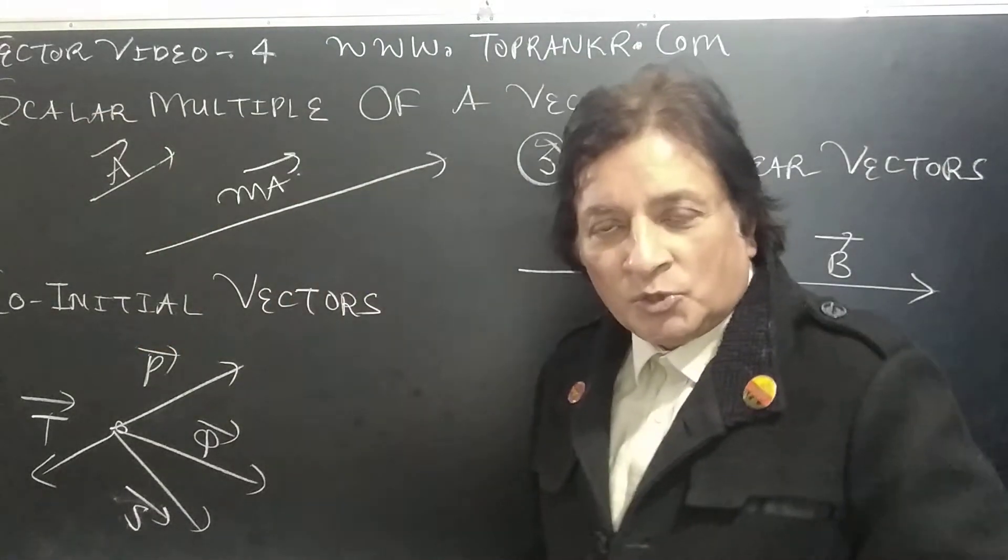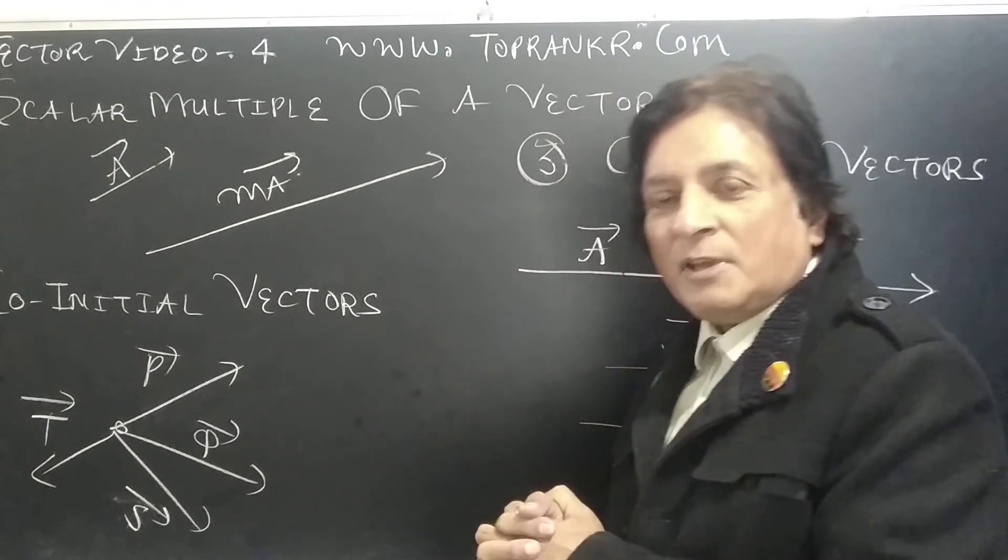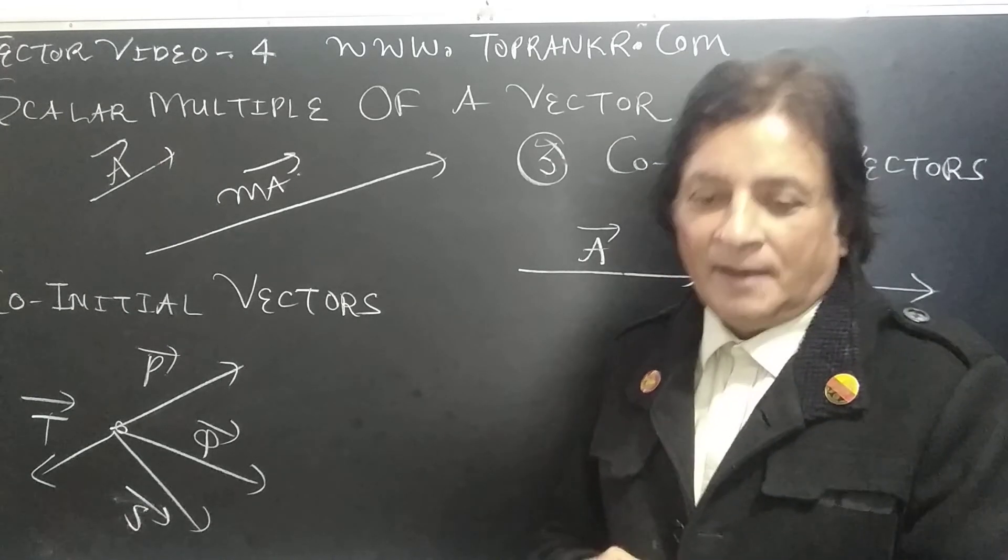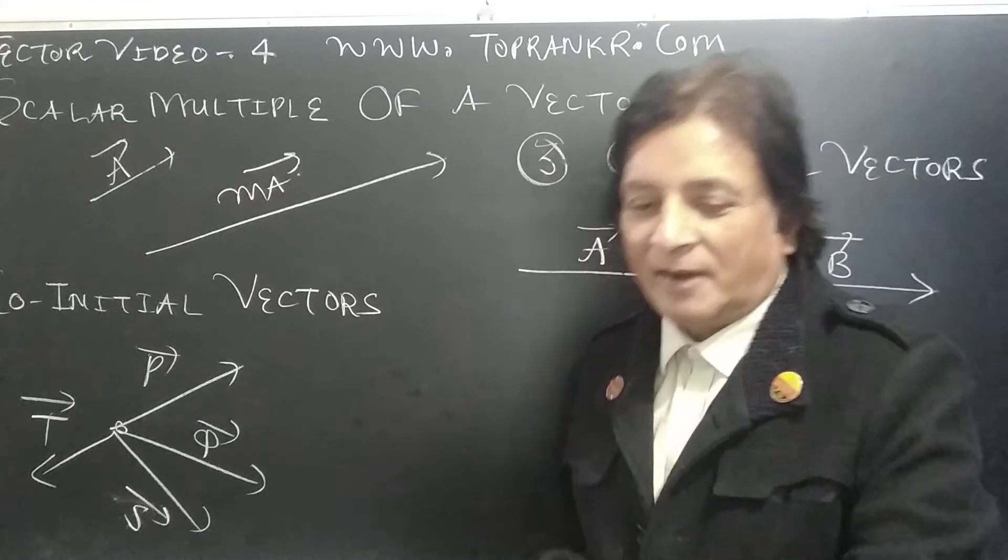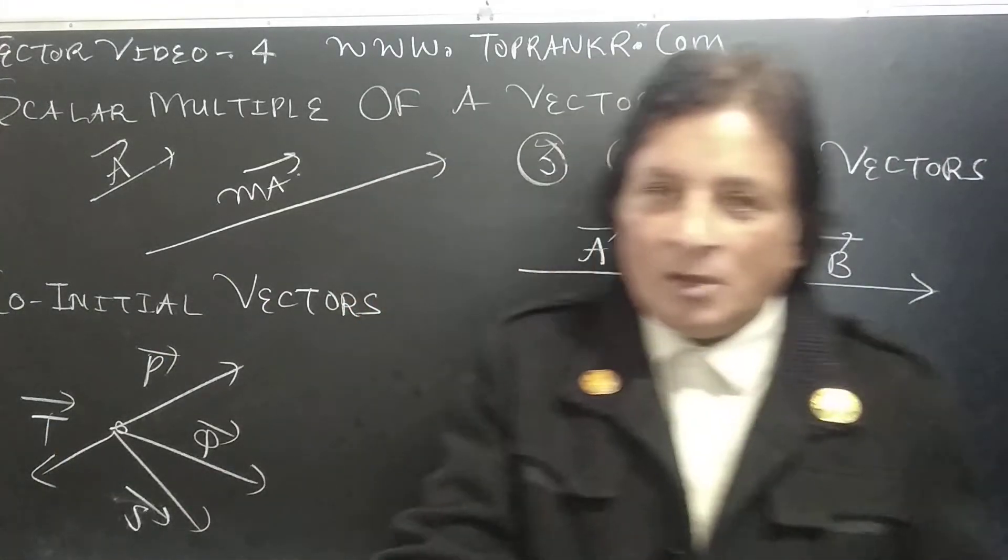So this is going to be a vector with more magnitude. What do we call this? It's called scalar multiple of a vector. Its magnitude is n times increased. Now I am going to tell you co-initial vectors.